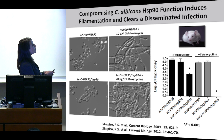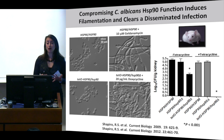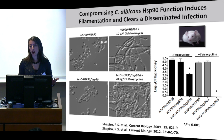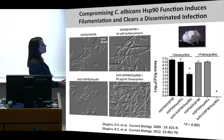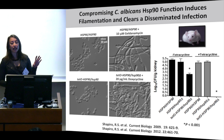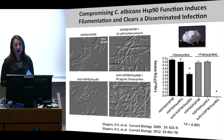We found that if we simply compromise Hsp90 function, we can induce robust transition to filamentous growth — this work was done in collaboration with Joe Heitman. Inhibiting Hsp90 pharmacologically induces filamentation, and we can recapitulate these effects genetically. Using our tetracycline-repressible Hsp90 strain with tetracycline in the drinking water for mice, in collaboration with John Perfect, we can completely sterilize kidneys when we transcriptionally repress Hsp90 in the pathogen — a genetic proof of principle that this is a good target.